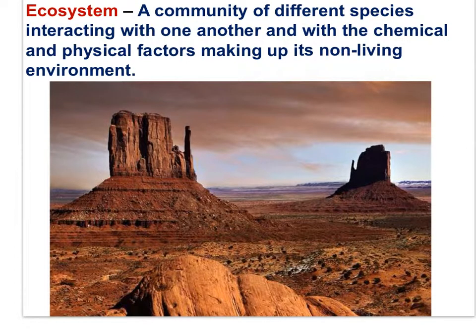In this photograph, we have a desert biome ecosystem. An ecosystem is a community of different species interacting with one another and with the chemical and physical factors making up their non-living environment. Different plant species interacting with primary consumers, and primary consumers interacting with secondary consumers, and all species interacting with the abiotic factors of high insolation, low precipitation, and widely fluctuating temperatures. I've chosen this image to emphasize the physical abiotic factors in an ecosystem.